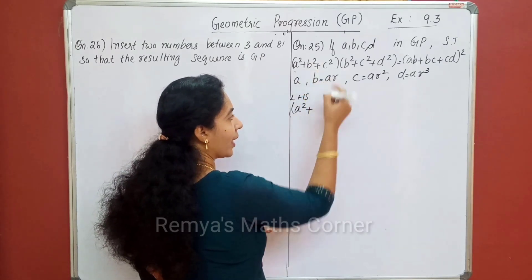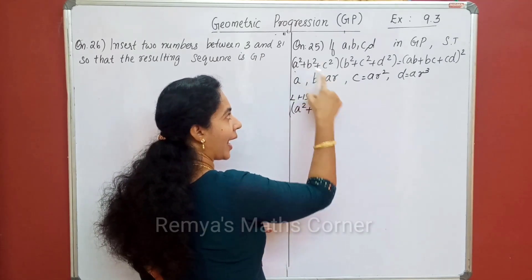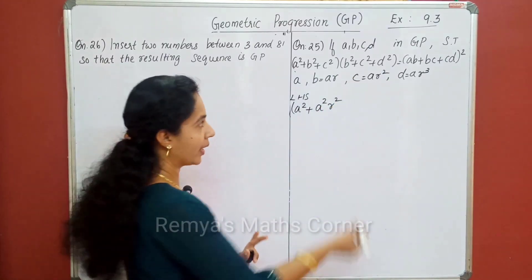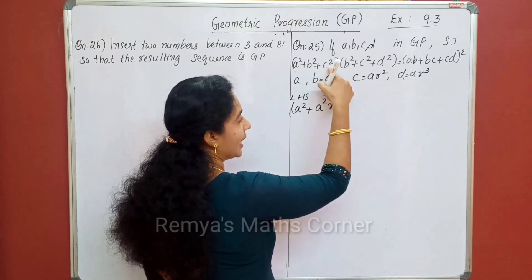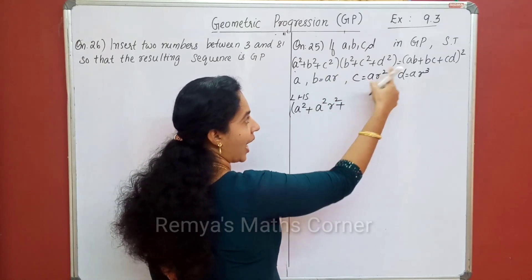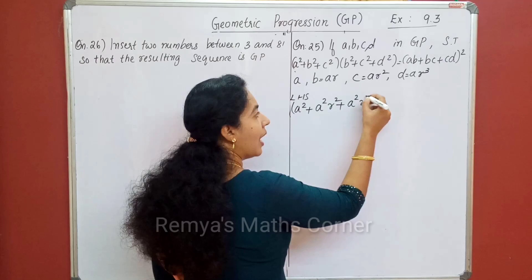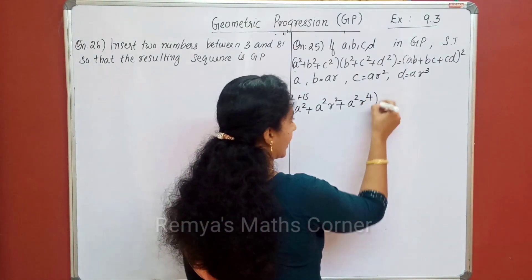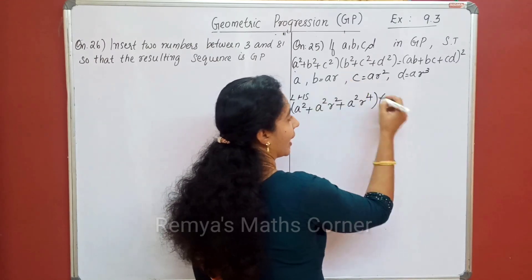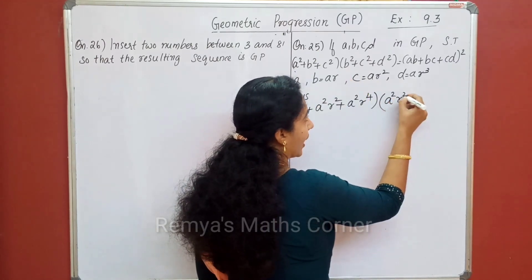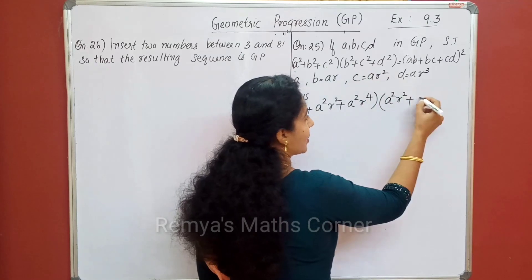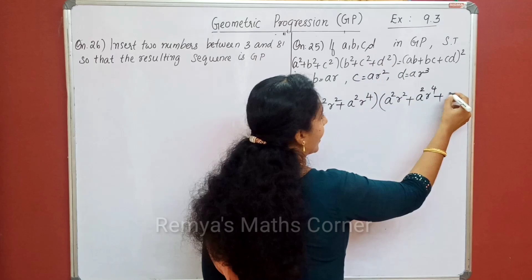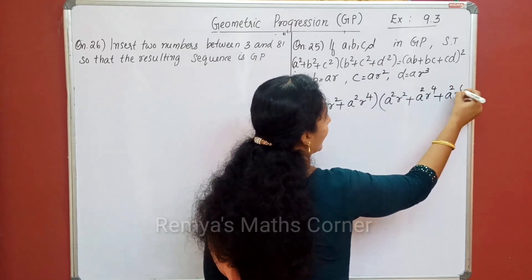Plus, if you go to b square, the square is a square. That is a square and a square. Plus, the square is a square. C is a square. A square is a square. R square is a square. Then, into — when we start, b square is a square, that is a square r square. C square. A square, r raised to 4. D square. A square, r raised to 6.